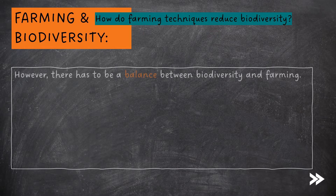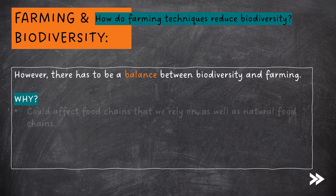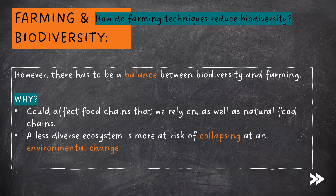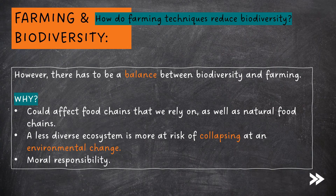However, there has to be a balance between biodiversity and farming. This is because a reduction in biodiversity could affect food chains that we rely upon, as well as natural food chains. A less diverse ecosystem is also more at risk of collapsing at an environmental change. And finally, there's also a moral responsibility to preserve species.